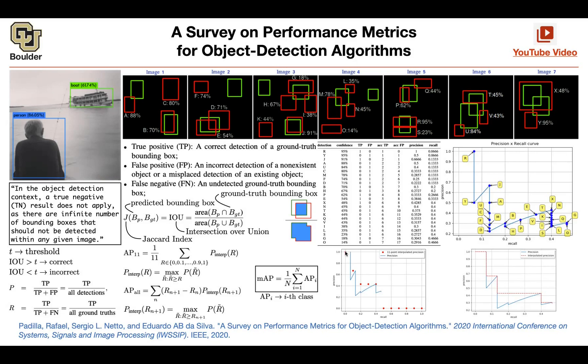So you first sort them according to your confidence, then you create a recall versus precision graph or precision versus recall graph. And then average precision is about the area under the curve.